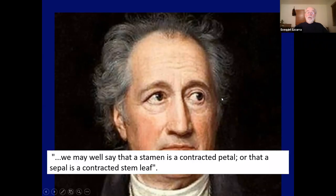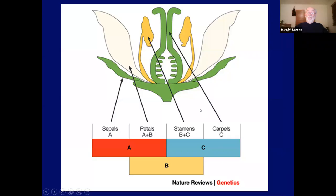Very interestingly, this transition was not understood initially by botanists, but by a poet — Goethe, the great German writer and poet. In one of his essays on nature, Goethe wrote: 'We may well say that a stamen is a contracted petal, or that a sepal is a contracted stem leaf.' He had an intuition for the idea that flower parts have evolved from stem leaves that gradually acquired a specific function. This has been proven very well by geneticists doing molecular work and is known as the ABC system of genes.